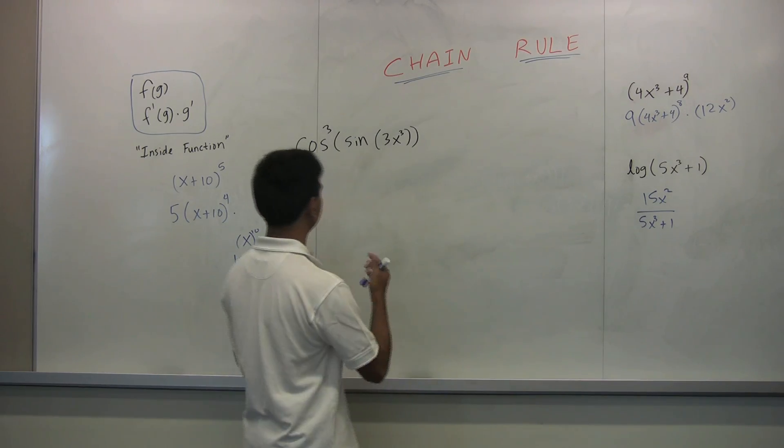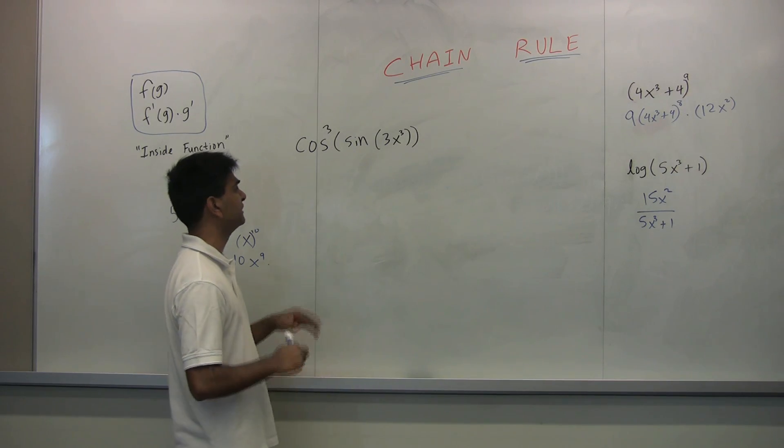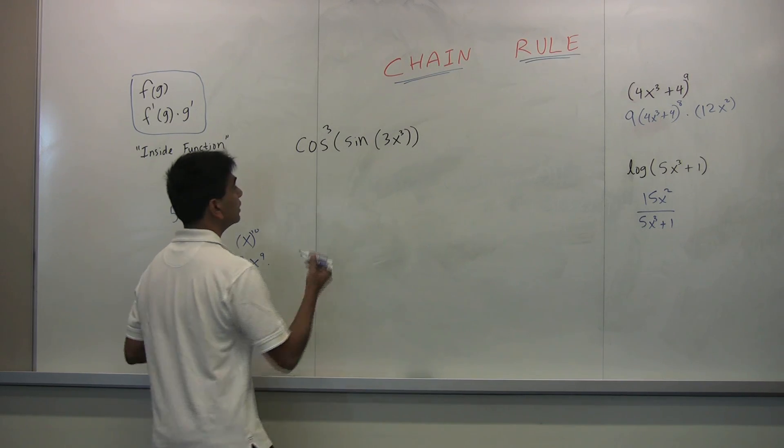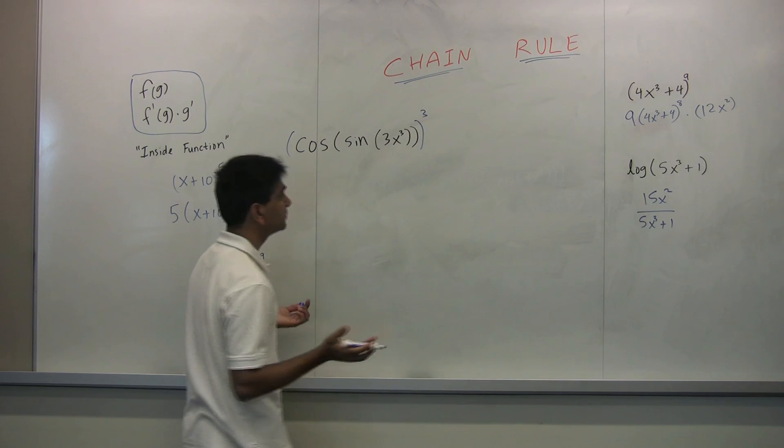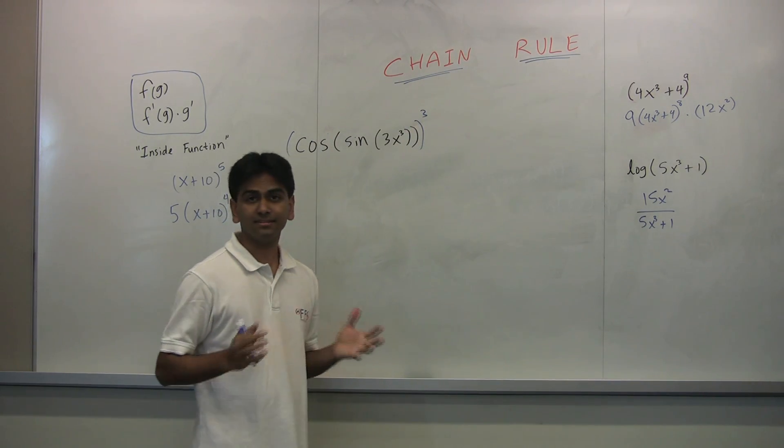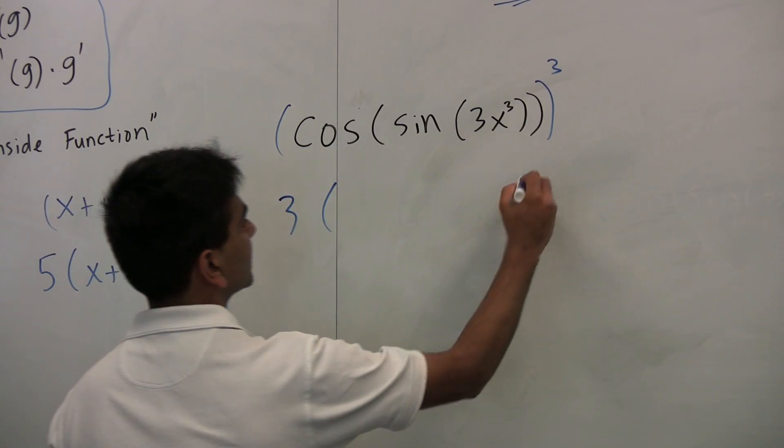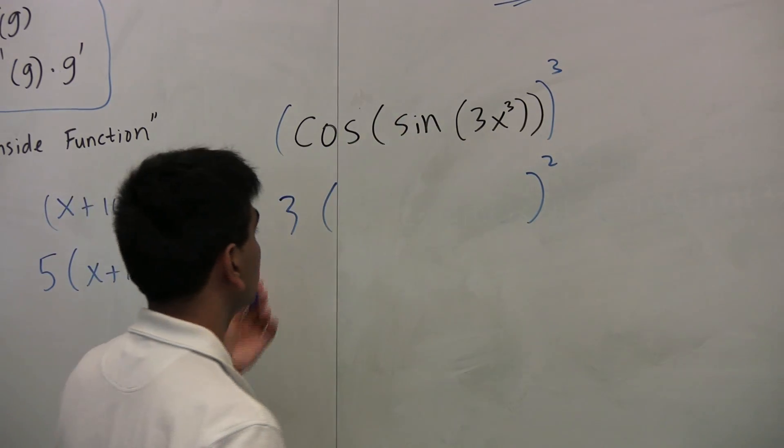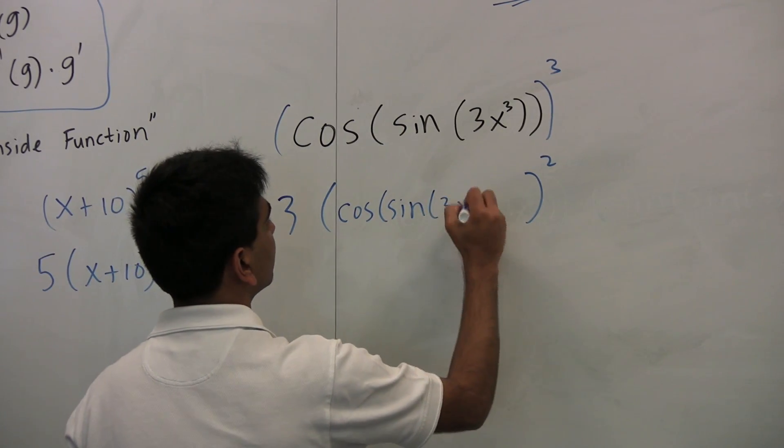Now let's look at the derivative of this really, really ugly looking problem, cos³(sin(3x³)). Well, we'll just take this step by step. So one useful thing is to rewrite this sort of like this. It just helps you visualize things better. So now keep in mind, the outside function is something cubed, and the inside function is this guy. So how are we going to solve this?